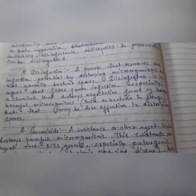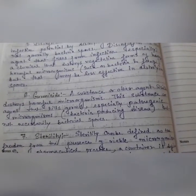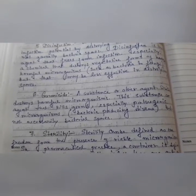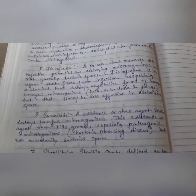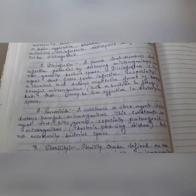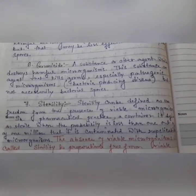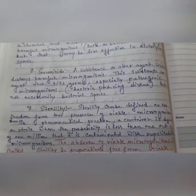Next, germicide — what do you mean by germicide? Germicide is a substance or agent that destroys harmful microorganisms. It is a substance that kills germs, especially pathogenic microorganisms and bacteria that produce disease, but not necessarily bacterial spores. Germicides are similar to disinfectants in that they kill bacteria which help to produce disease, but not necessarily bacterial spores.